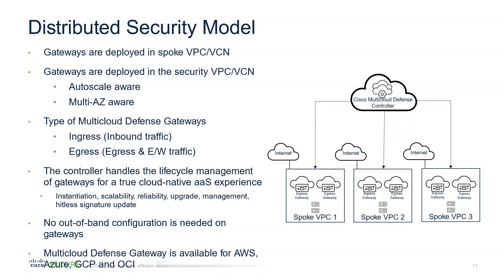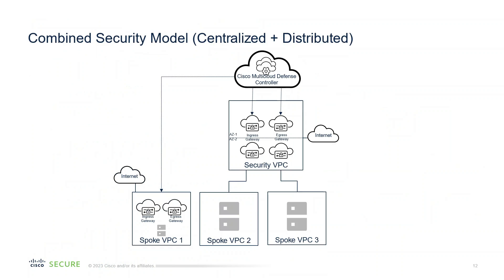In the distributed model, the difference is that we're delivering the gateways within the spokes themselves. If every spoke has internet access, you might be delivering ingress or egress controls within those spokes. In the combined security model — centralized and distributed — you might have a centralized model for some spokes and deliver ingress, egress, and east-west gateways within that security VPC, while also having a distributed model to support ingress and egress within spoke VPCs depending on the design.